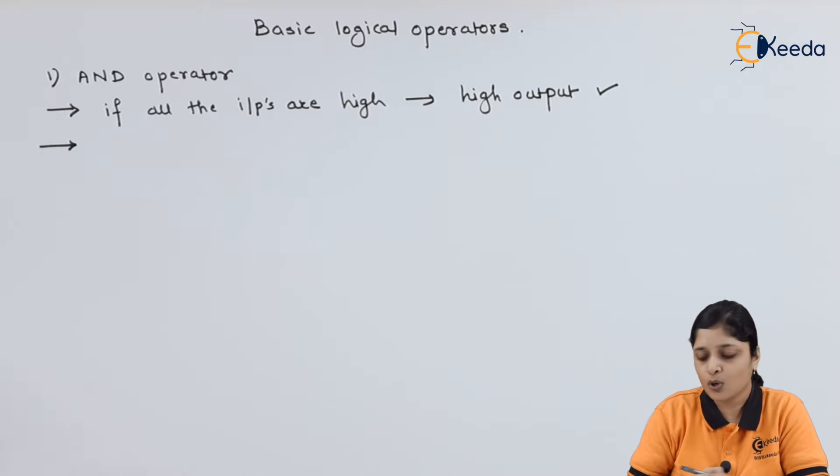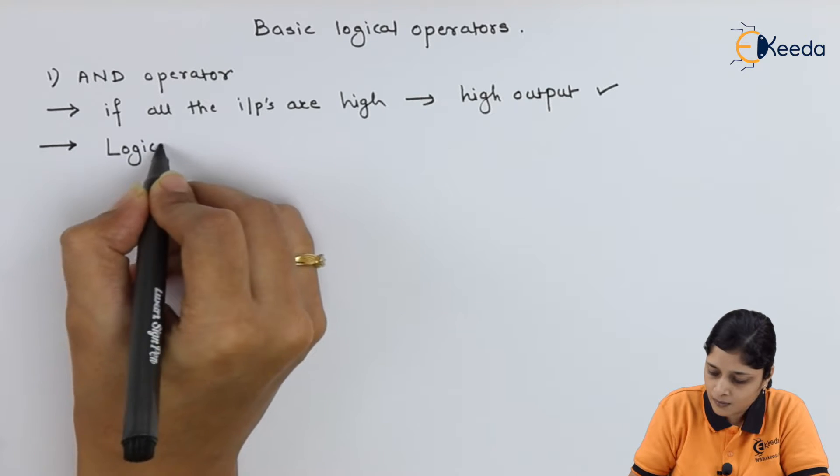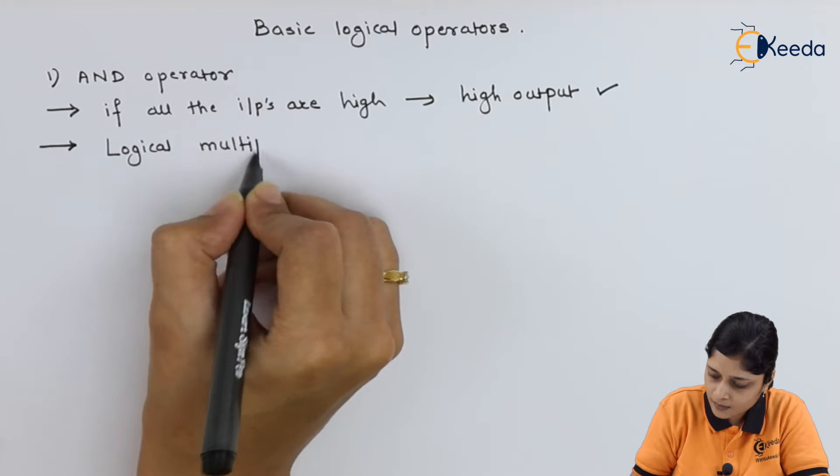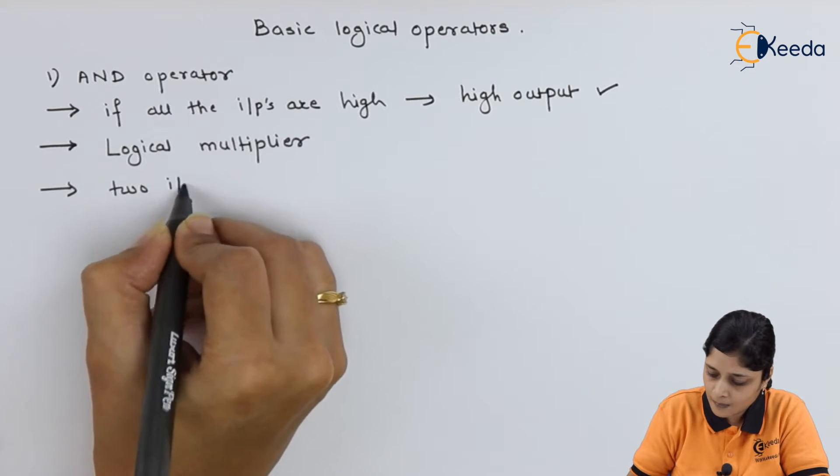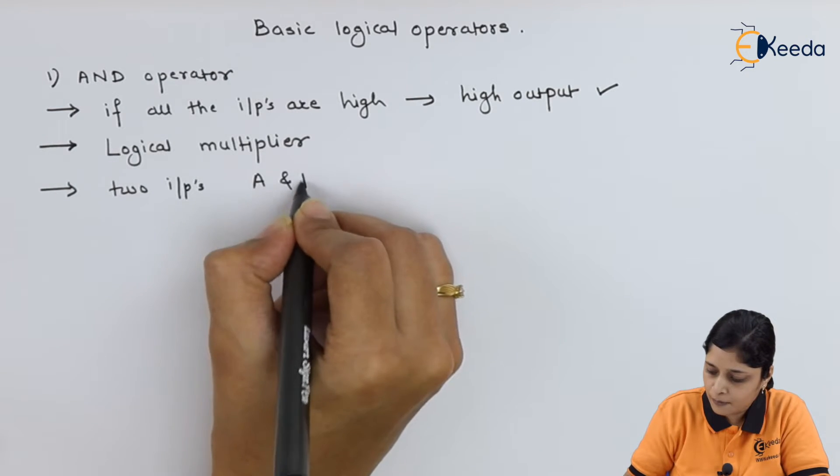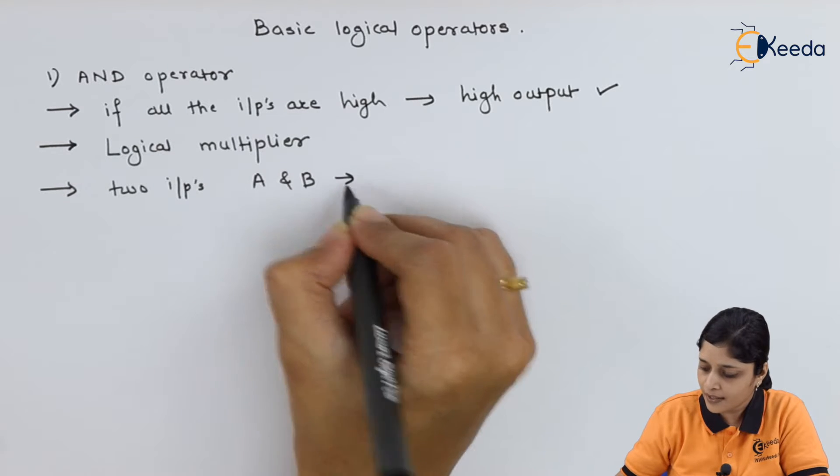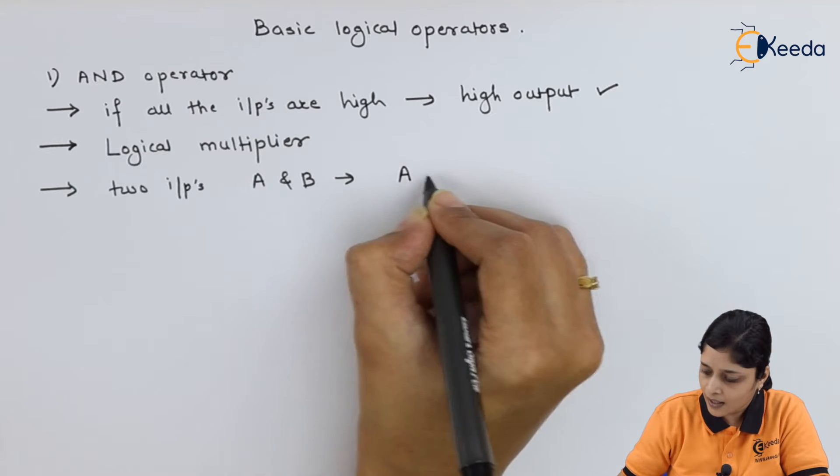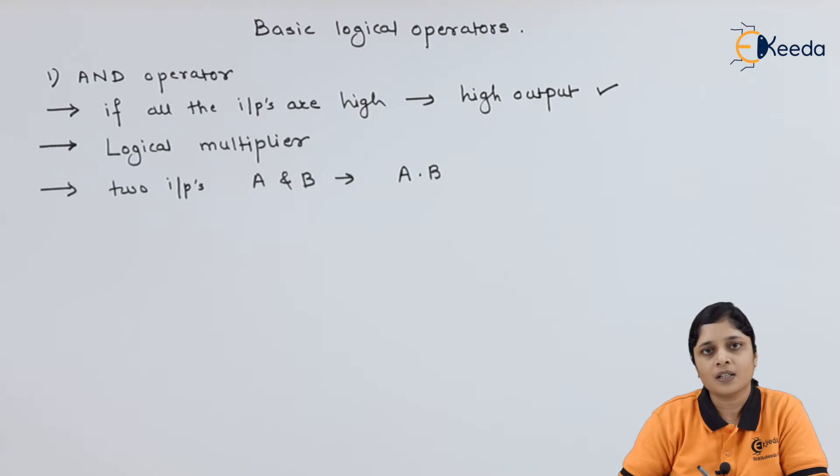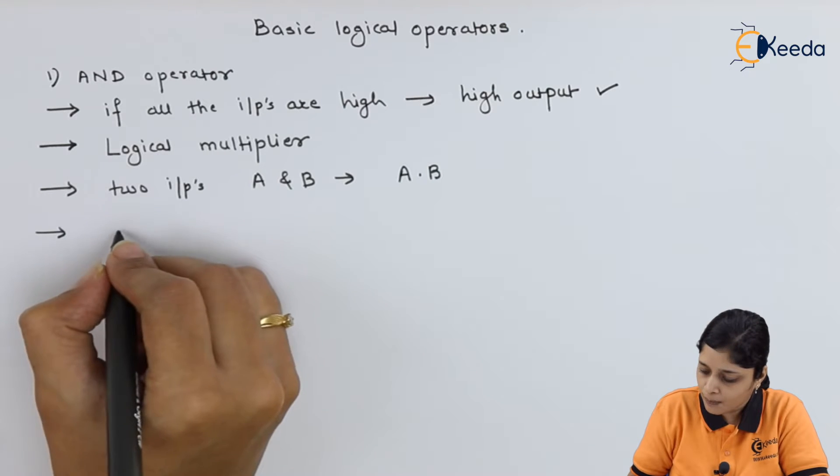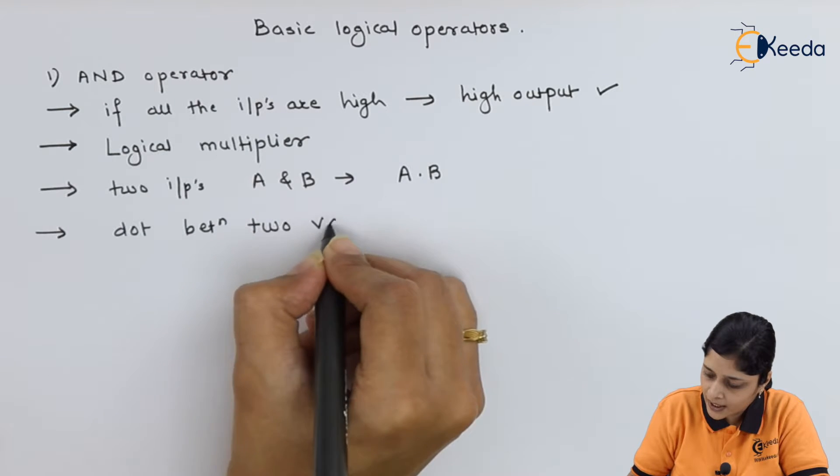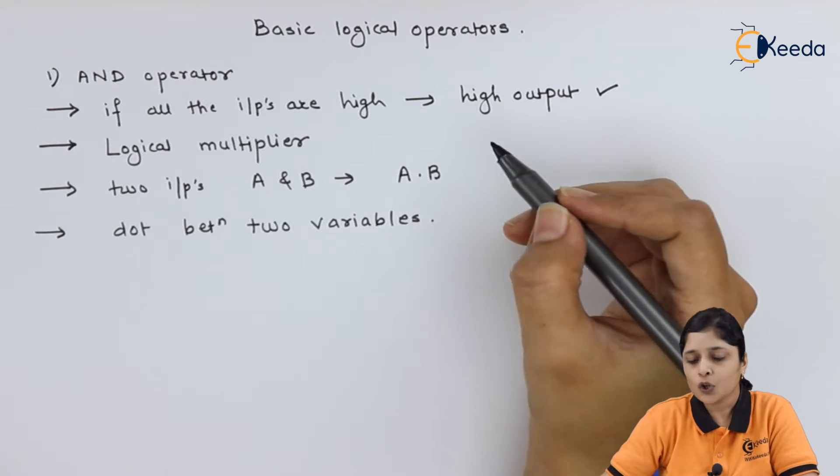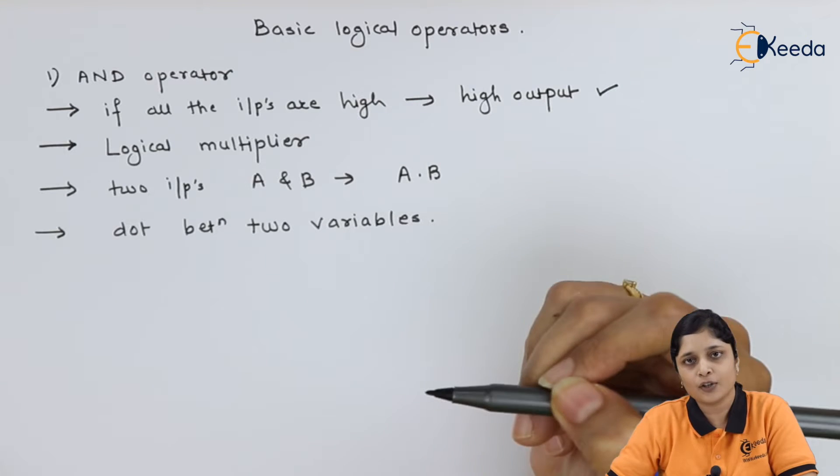AND operator is also called logical multiplier. Here, if you have two inputs A and B, then you will write A dot B. This gives you the expression for logical AND operator. You have to apply dot between two variables. So these are all the features of AND operator.